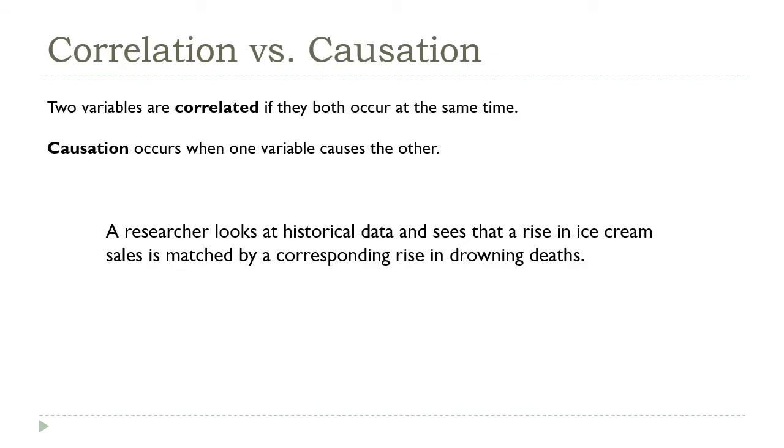So when we have two variables, and we're thinking in terms of explanatory versus response, there are two possible scenarios. One is that the two variables are correlated. That means they both change in sync with each other, either both going up or both going down. And the other option is that one of the changes is actually causing the other, which is what we mean by causation.